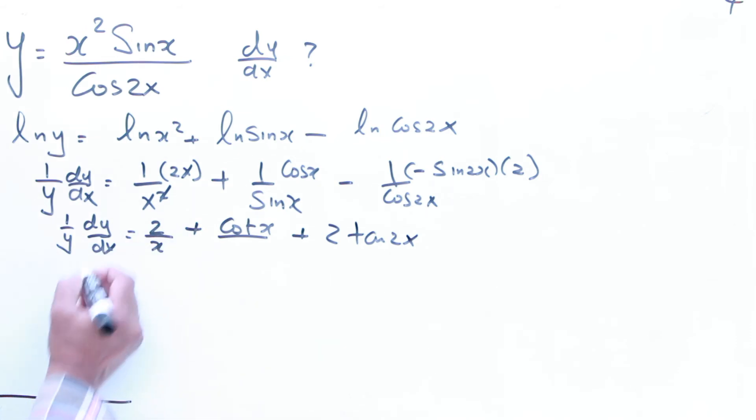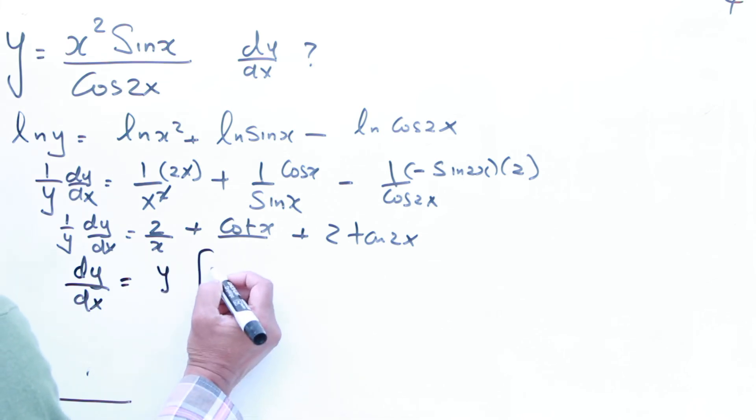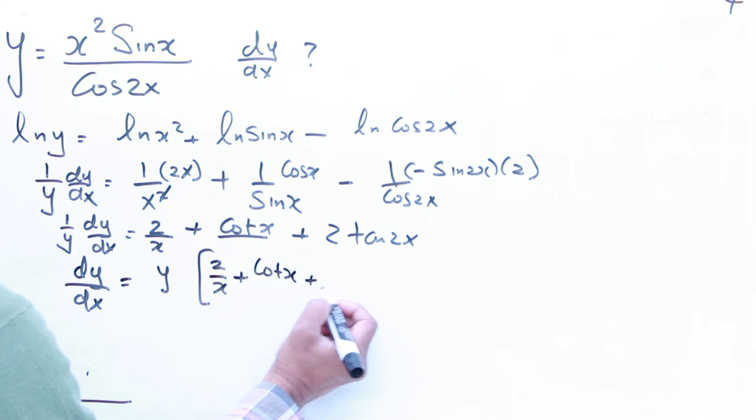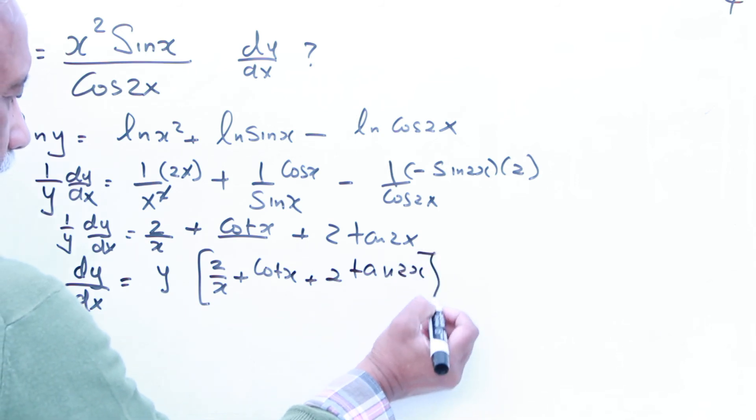So this is dy by dx, it simply is going to be, if you cross multiply with y, so I'm going to say y times bracket 2 over x, plus cot x, plus 2 tan 2x.